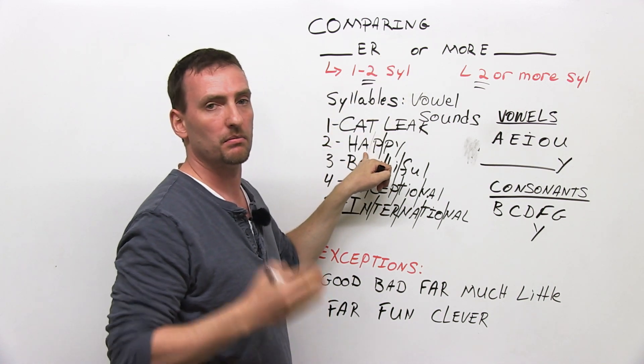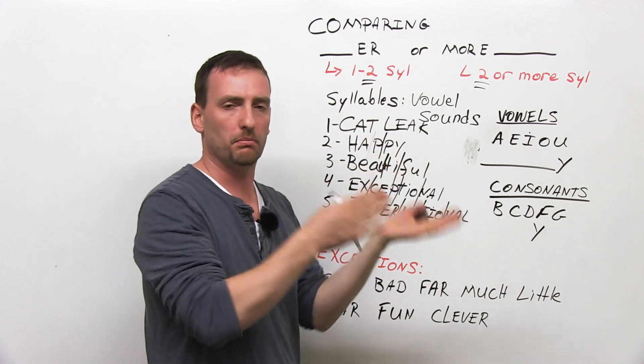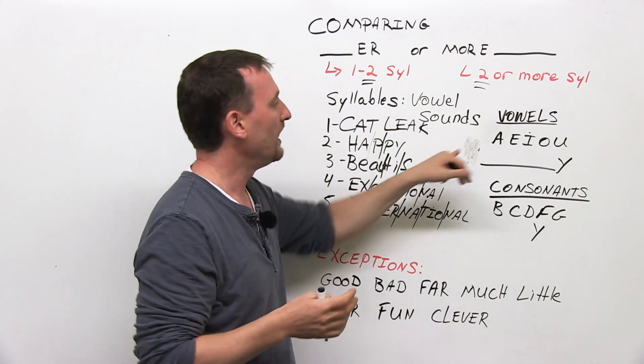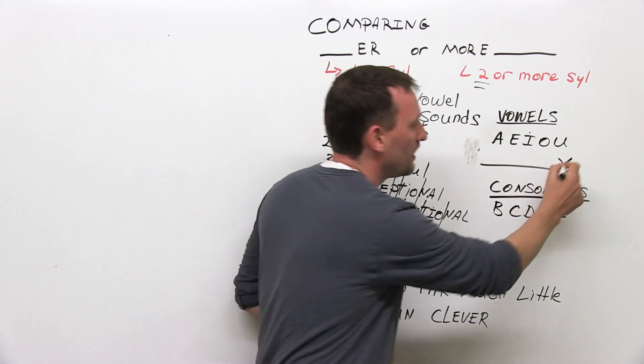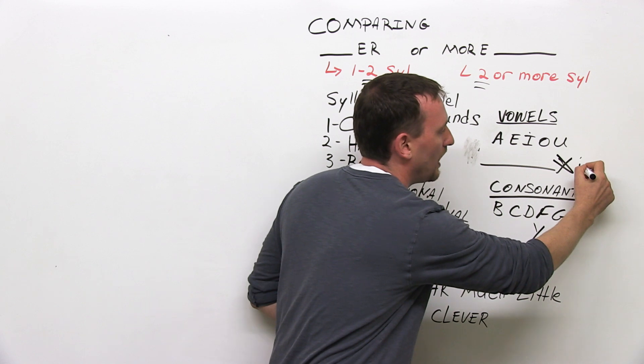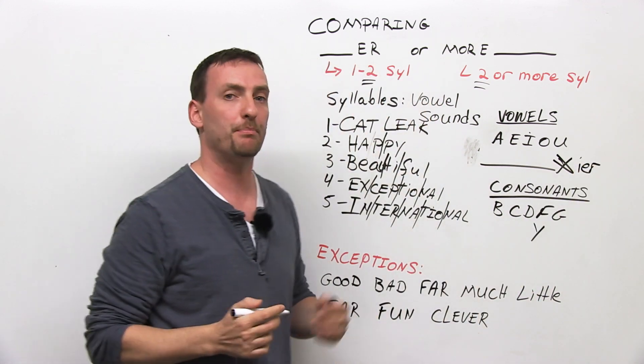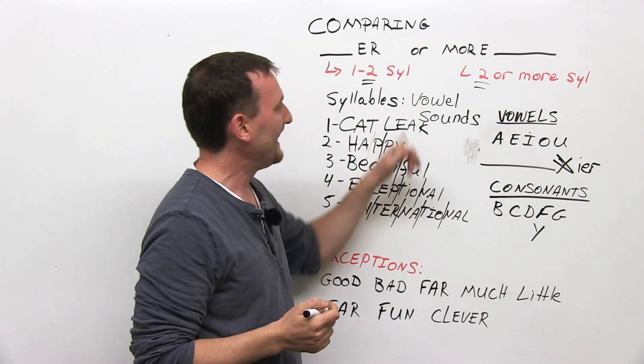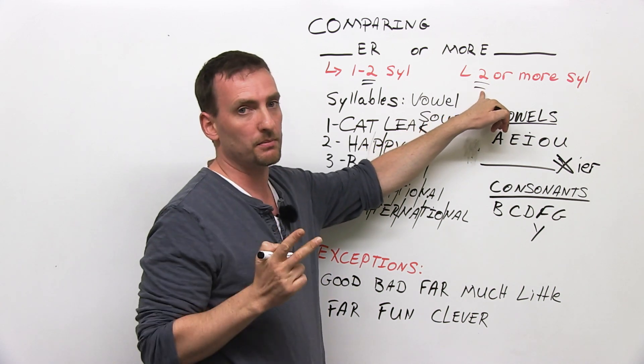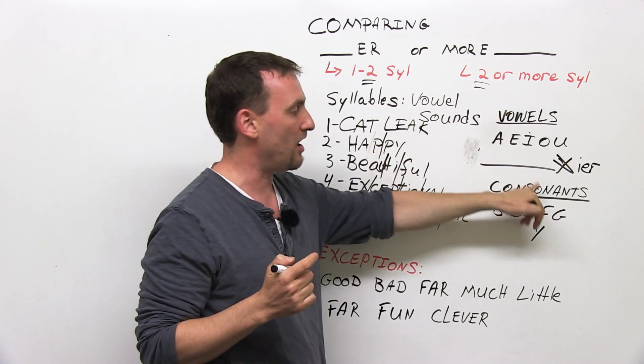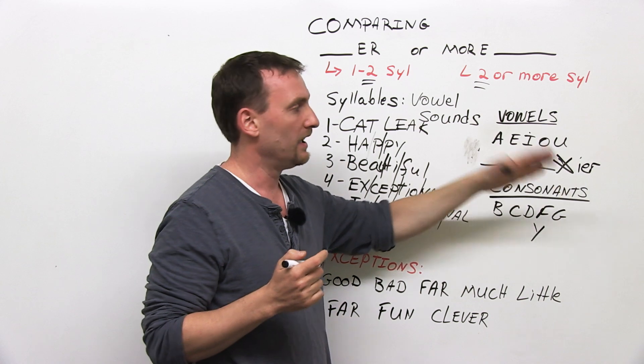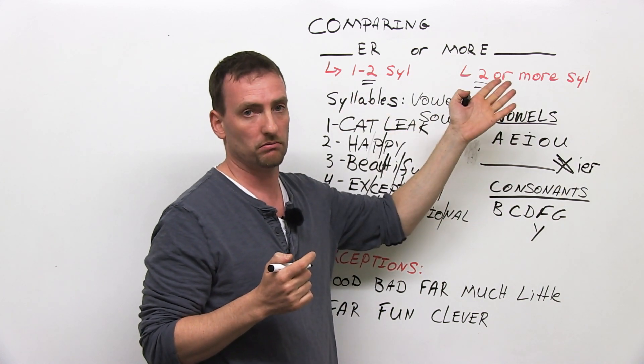use e-r. So happy, if you want to compare two things, who's happier, me or my friend, then you drop the y, and you put i-e-r. Happier. If the word, the two-syllable word ends in a consonant, then you use more.